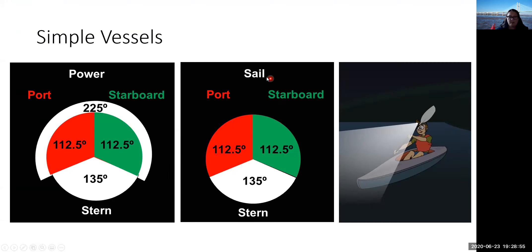For a vessel under 7 meters capable of no more than 7 knots — a kayaker, paddleboarder, or dinghy — it just needs one white light. Moving up to a sailboat: it has port, starboard, and stern lights — either a bicolor at the bow plus stern light, or a tricolor at the top of the mast. A power-driven vessel is the same as a sailing vessel but with a masthead light added. The masthead light covers 225 degrees, so you won't see it from the stern.